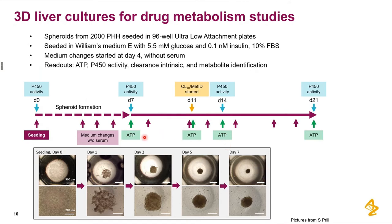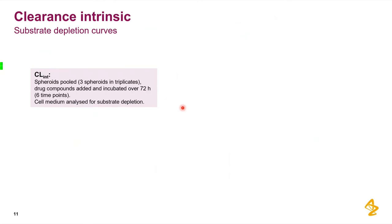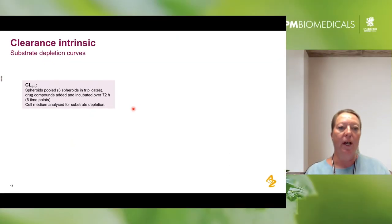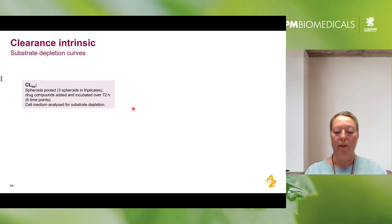In this setting, we have measured P450 activity and ATP as a viability measurement at several time points. The clearance and metabolite identification experiments were started on day 11. These experiments are run in a pool of three spheroids — we add the drug compound and incubate over 72 hours, then analyze the medium for substrate depletion.